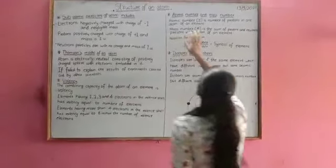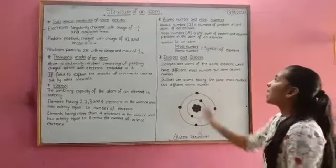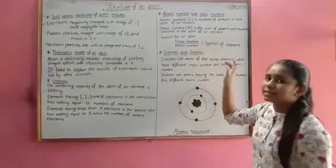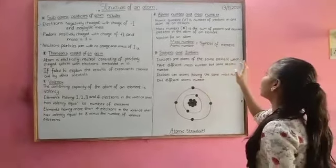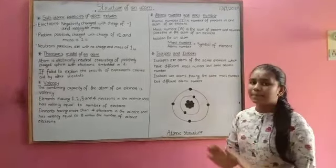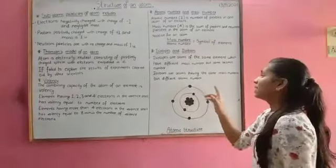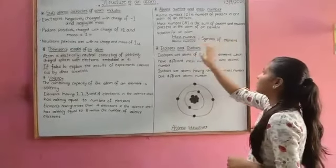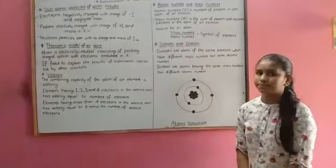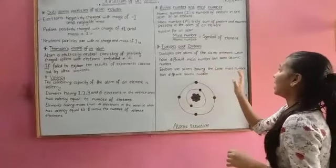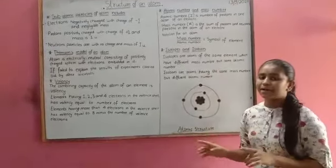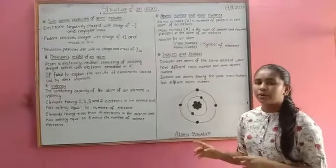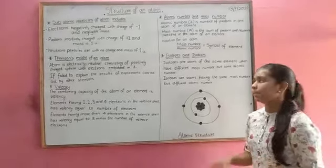Now, atomic number and mass number. Atomic number, denoted by Z is number of protons in one atom of an element. Mass number is denoted by A is the sum of protons and neutrons present in the atom of an element. Notation for an atom: Mass number divided by atomic number is equal to symbol of the element.